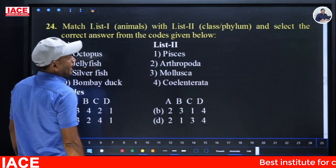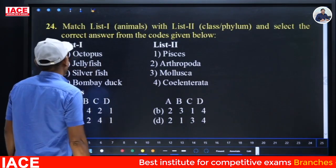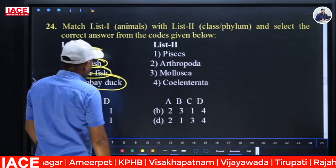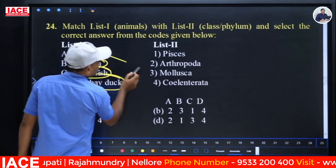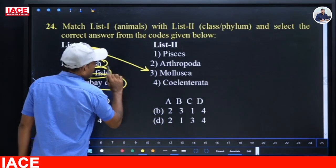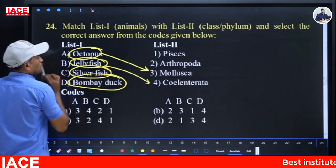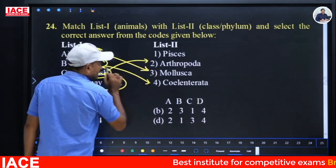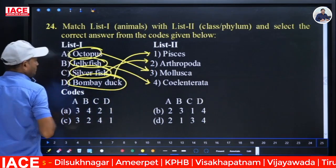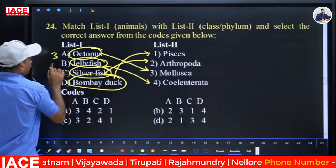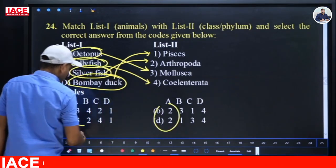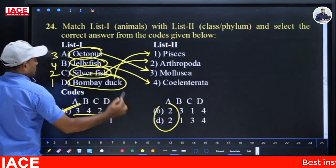Next: Match class of animals — Octopus, Jellyfish, Silverfish, Bombay Duck. Octopus belongs to Mollusca — commonly called Devil Fish (not actually a fish). Jellyfish belongs to Coelenterata — scientifically Aurelia. Silverfish (Lepisma) is an insect belonging to Arthropoda. Bombay Duck is a fish belonging to class Pisces. Sequence: Octopus–3, Jellyfish–4, Silverfish–2, Bombay Duck–1. Option A — 3, 4, 2, 1 is the correct answer.